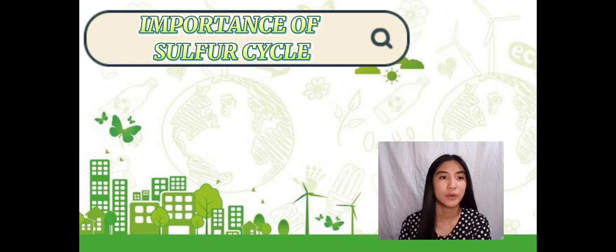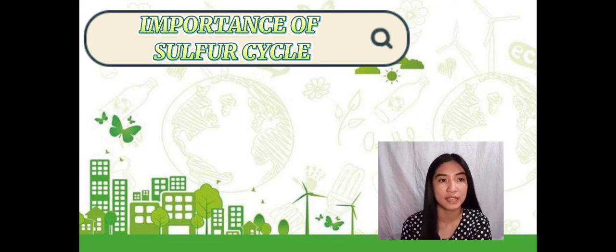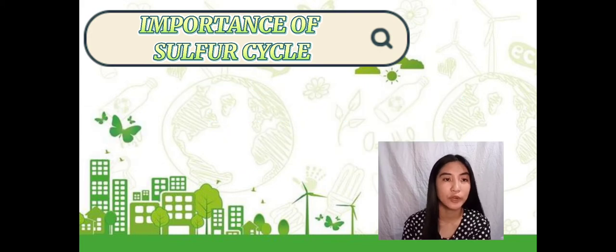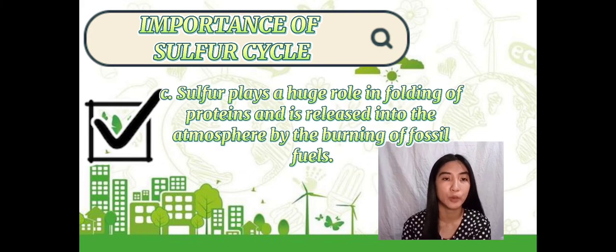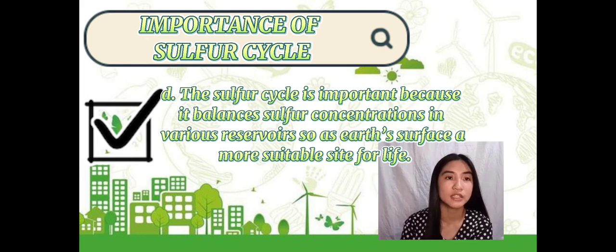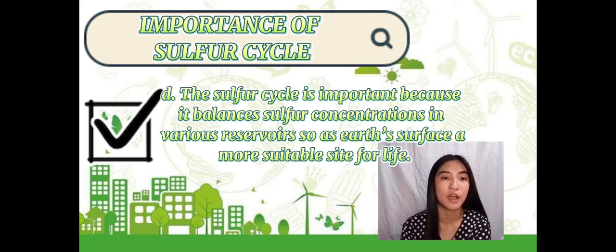Next is why the sulfur cycle is important. Sulfur is essential to all living things. It is required for the proper functioning of proteins and enzymes in plants and animals. Sulfur plays a huge role in the folding of proteins and it is released into the atmosphere by the burning of fossil fuels. The sulfur cycle is important because it balances sulfur concentrations in various reservoirs so as to make the earth's surface a more suitable site for living organisms. Because sulfur occurs in nature in combination with other elements such as nitrogen, iron, and phosphorus, the sulfur cycle has an impact on other elements available.